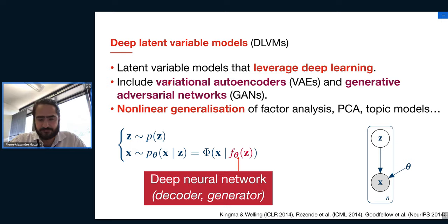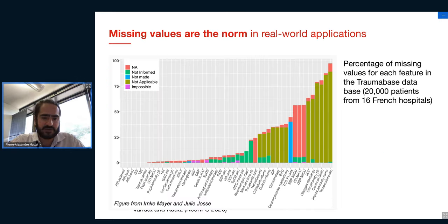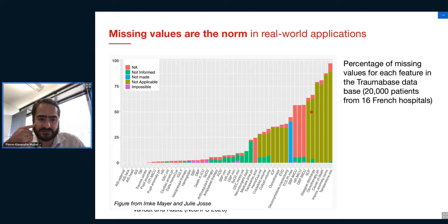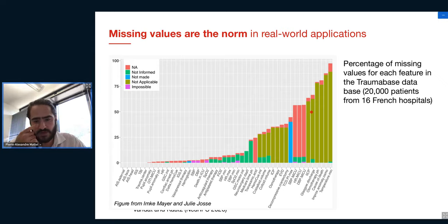A few words about missing values before the technical parts. In practice, missing data are the norm rather than the exception in real machine learning applications. This slide, which I borrowed from Julius who is here today, shows a large-scale dataset from French hospitals — electronic health records — where many features have more than 50% of patients with missing values. If we removed all patients with missing values, we would remove almost everything.